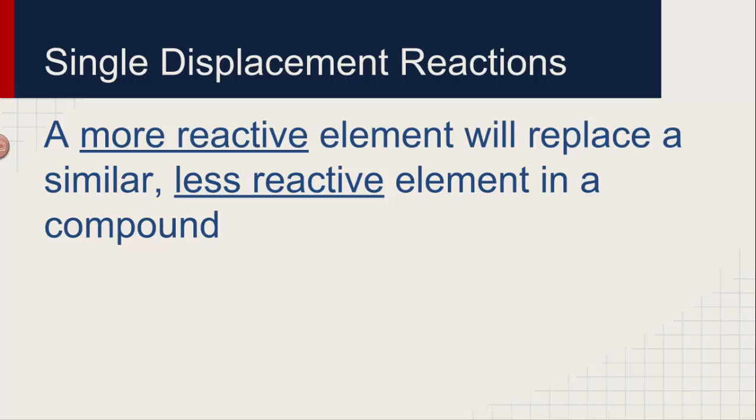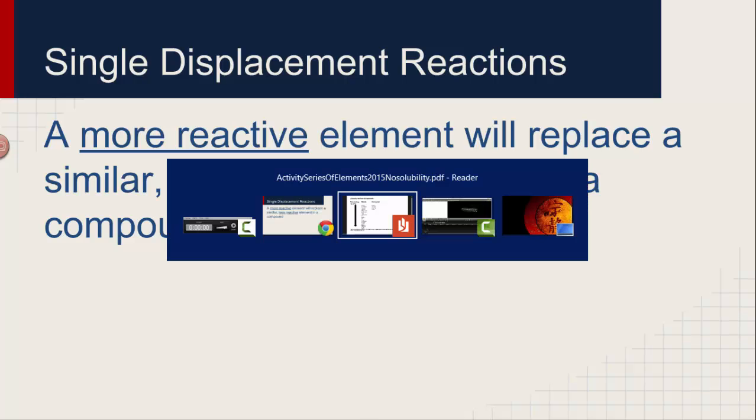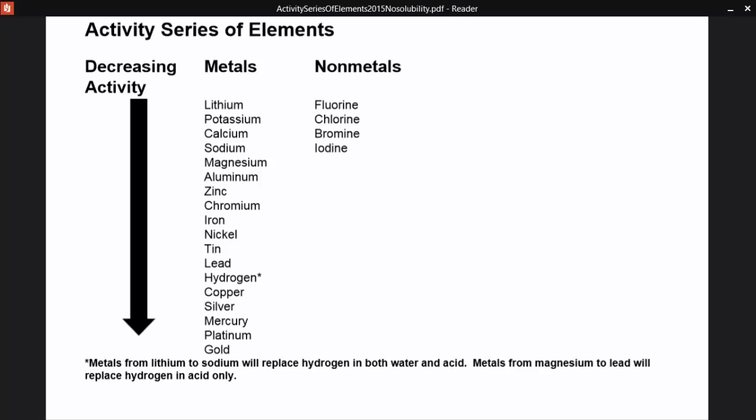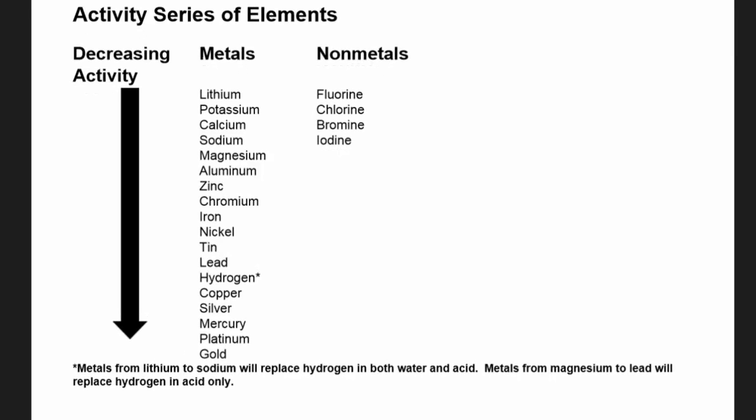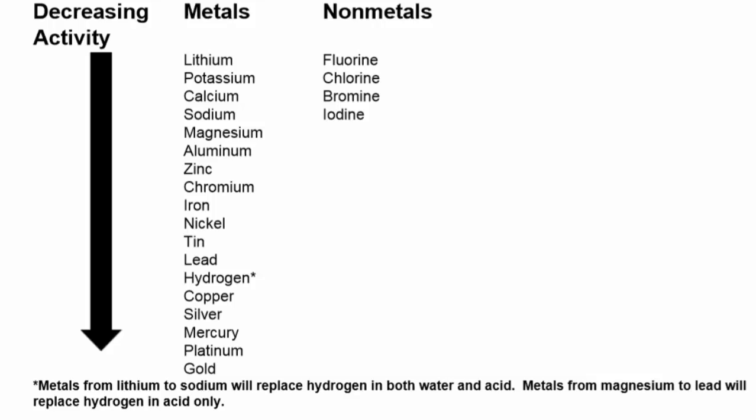The way we're going to use this information is to look at the activity series of elements. This is a handout that will be available in Google Classroom. You can download it and use it as needed. To start with, it's separated into metals and non-metals, and up to this point we've only looked at metals.